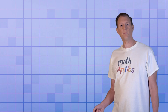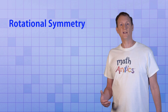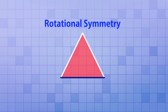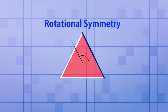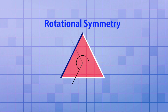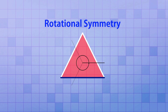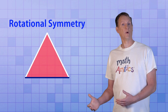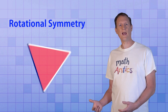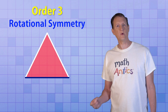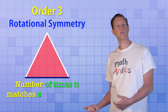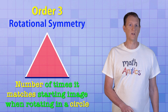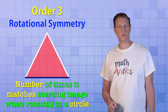In addition to line symmetry, regular polygons also have rotational symmetry. Let's see it with our equilateral triangle. We'll color the bottom edge to keep track of how much we've rotated it. When we rotate it one third of the way around, it exactly matches the original triangle. We can rotate it another third and it matches again, and one more time after rotating all the way around. There were three spots where the rotated triangle matched, so we say it has ORDER 3 rotational symmetry. The order of rotational symmetry is the number of times a shape matches the starting image when rotating in a complete circle.